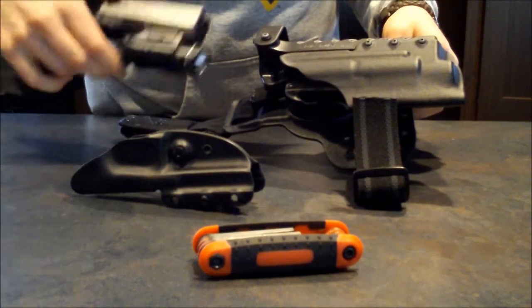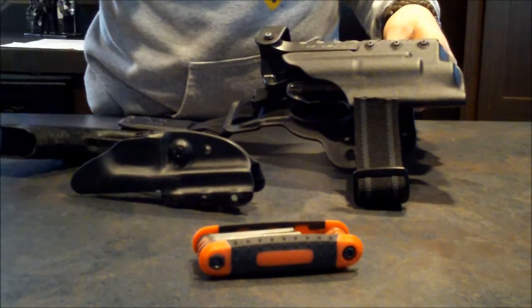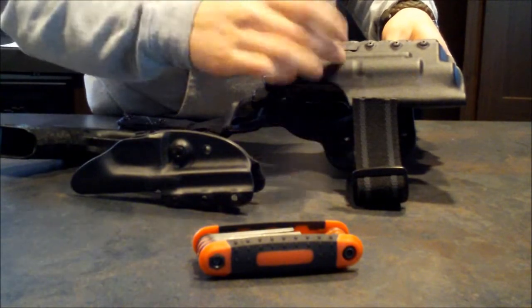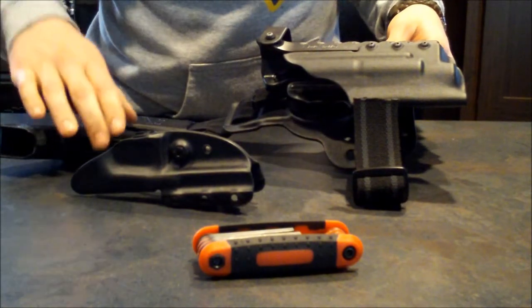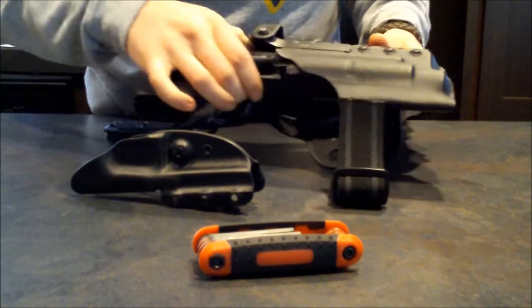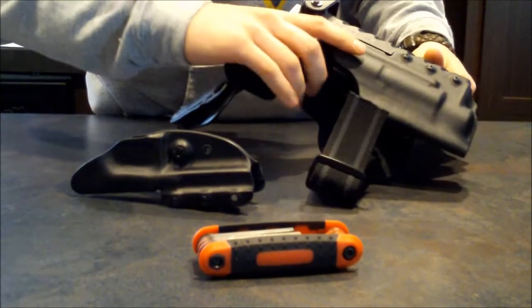For instance, say you're running this Streamlight TLR1 and you want to go to Surefire, just get on their website and order the cowl for like $25. And you have the cowl for any type of light configuration that you want.